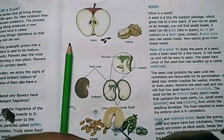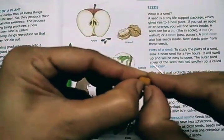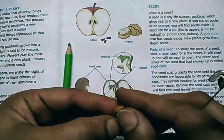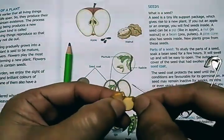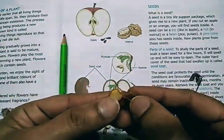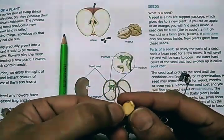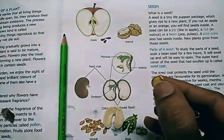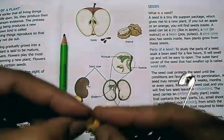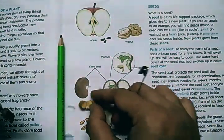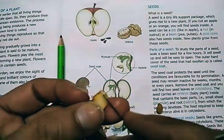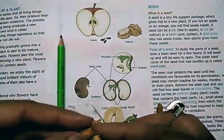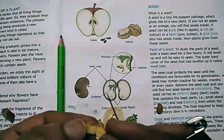Let me show you the same structure in a gram seed also. Here I will open the gram seed. You can see the same structures are visible here. The outermost is the seed coat — here I have removed the seed coat. Then come the two cotyledons. And then is the baby plant — you can see the baby plant here.